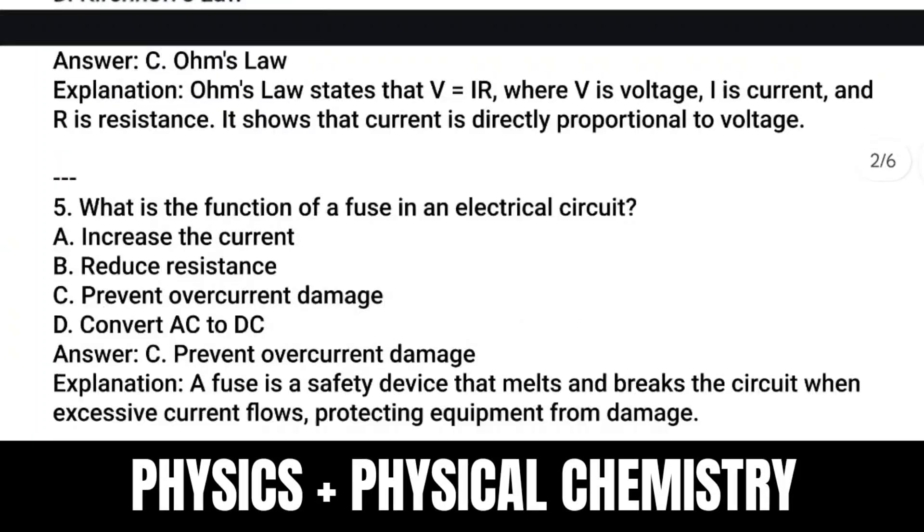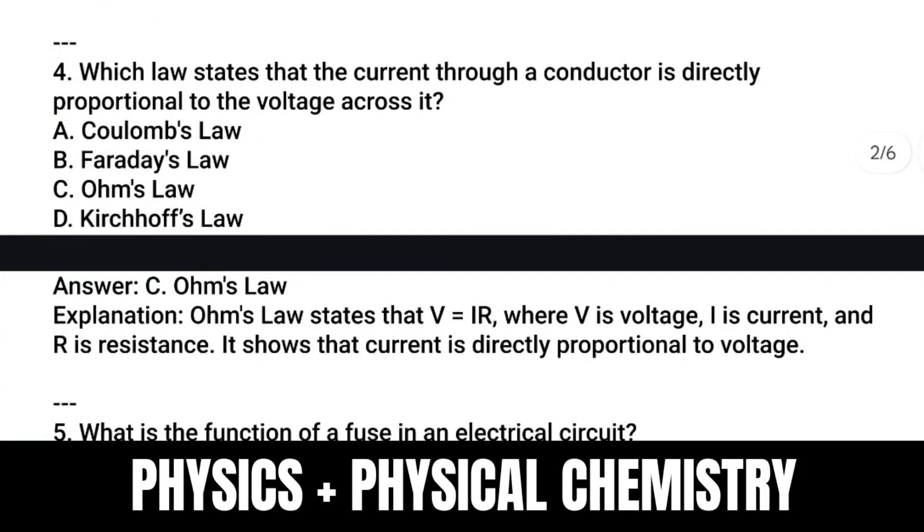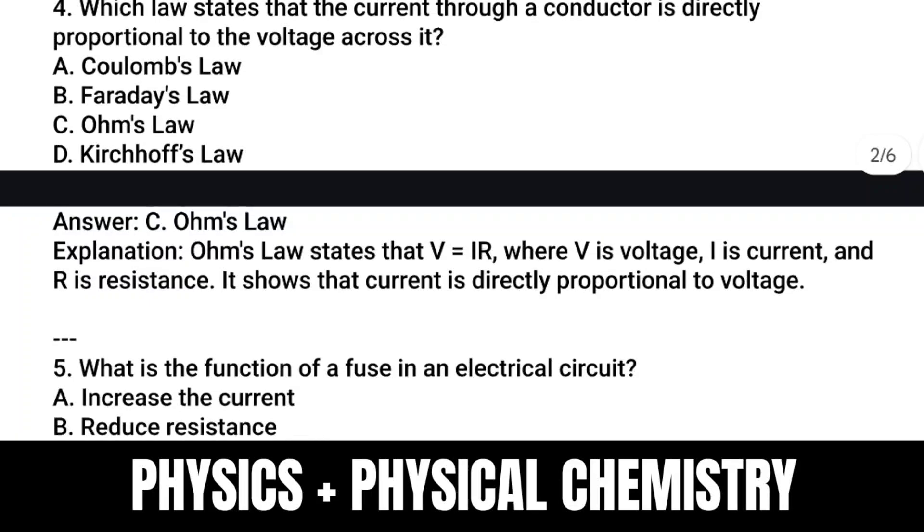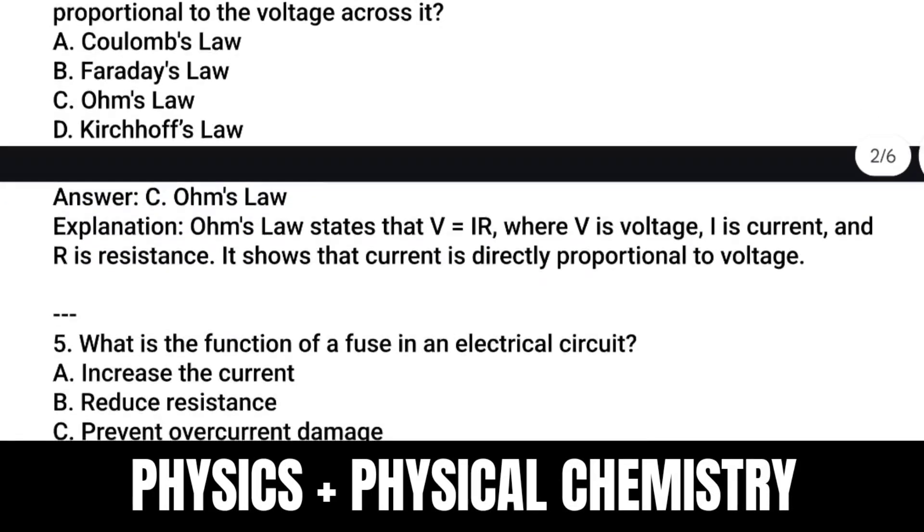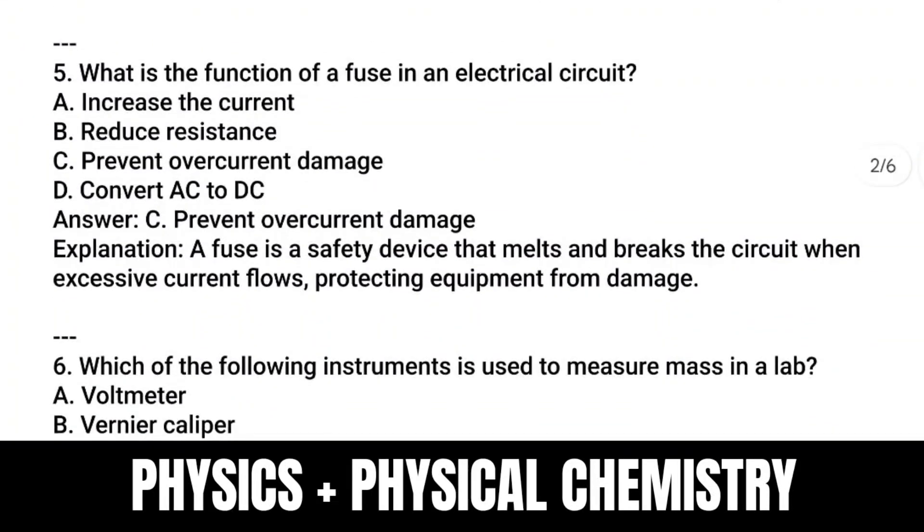Question number four: Which law states that current through a conductor is directly proportional to the voltage across it? Answer is Ohm's Law. Ohm's Law states V = IR, where V is voltage, I is current, and R is resistance. It shows that current is directly proportional to voltage.